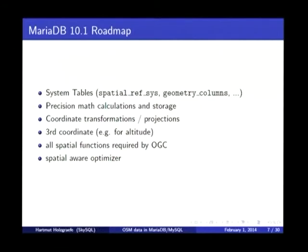There are a few things coming up on the roadmap, like the missing project points, higher precision calculations so you don't have overlapping shapes but shapes that are touching each other. There's also support for 3D coordinates, so that you can store altitude information in geography data.